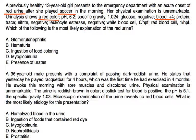Protein is trace, nitrite negative, leukocyte esterase negative, white blood cells zero per high-powered field, and red blood cell is only one per high-powered field. Which of the following is the most likely explanation of the red urine?